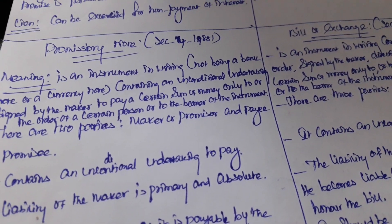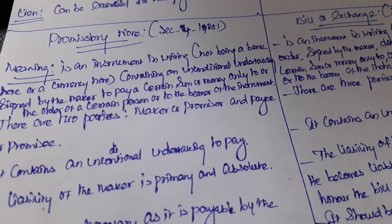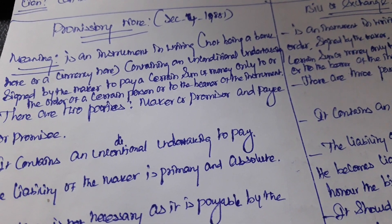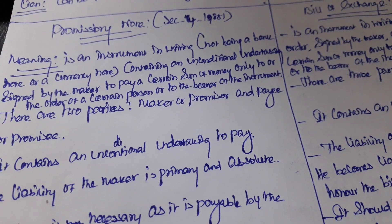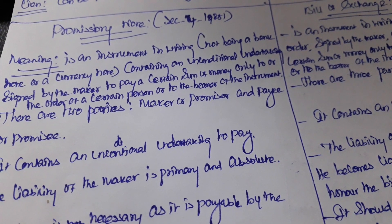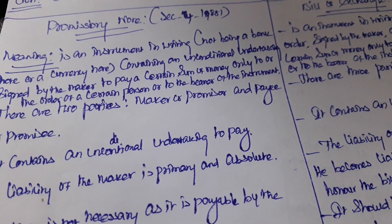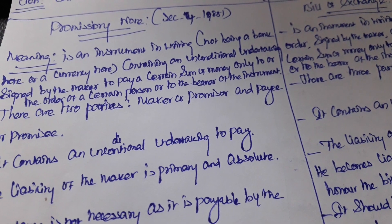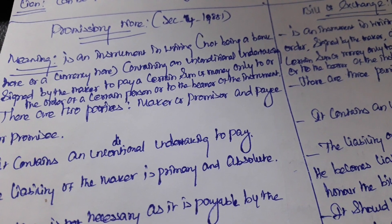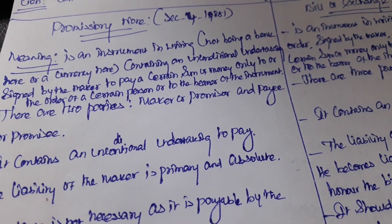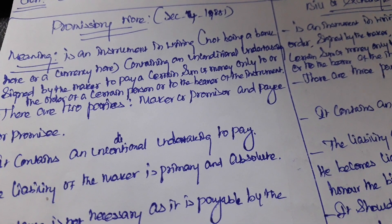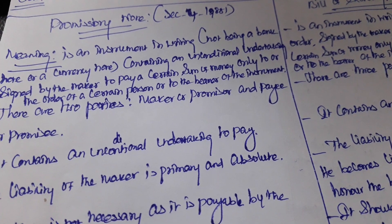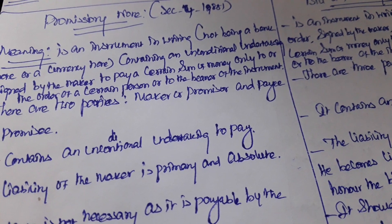The next difference is between promissory note and bill of exchange. Promissory note, under Section 4 of the Negotiable Instruments Act, is an instrument in writing — not being a bank note or a currency note — containing an unconditional undertaking signed by the maker, who prepares the promise, to pay a certain sum of money only to the order of a certain person or the bearer of the instrument.